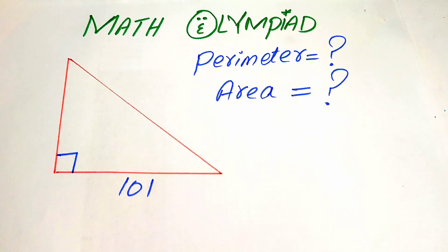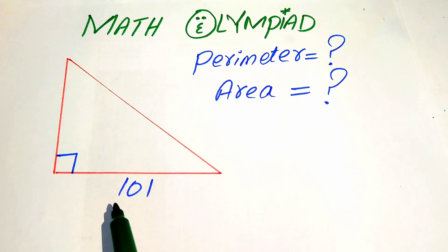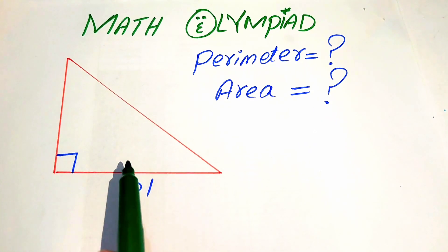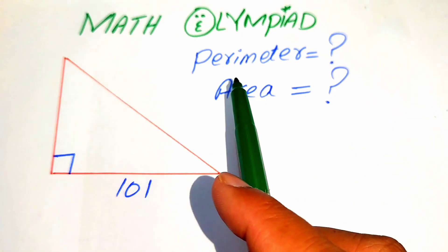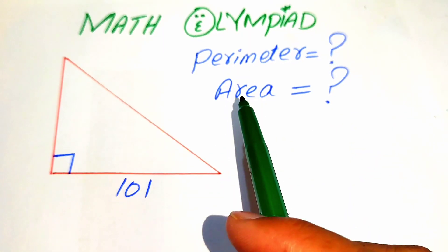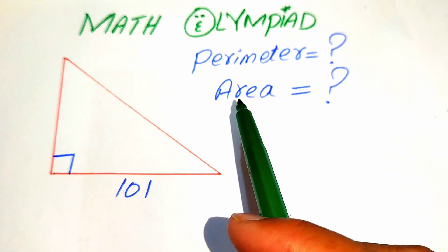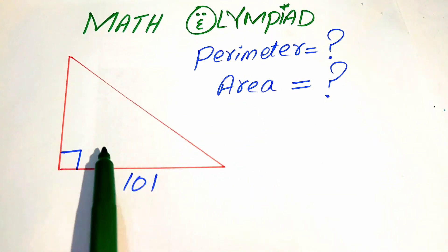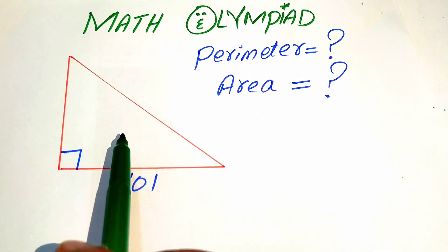Hello everyone, welcome to solve this math geometry challenge. Here we have a nice right triangle in which the length of one side is given and it is 101. We solve this problem for the value of perimeter and area. In order to find the perimeter and area, first we find the length of the other two sides.